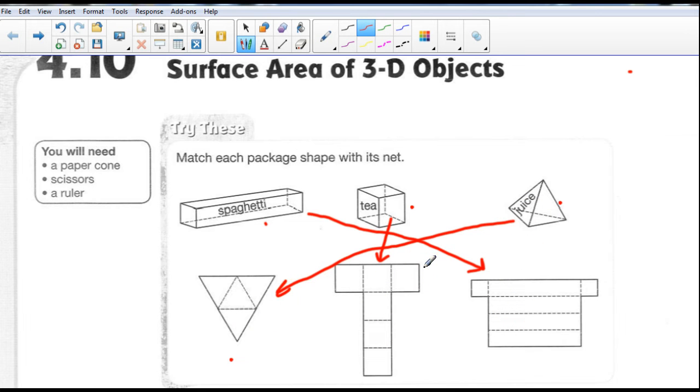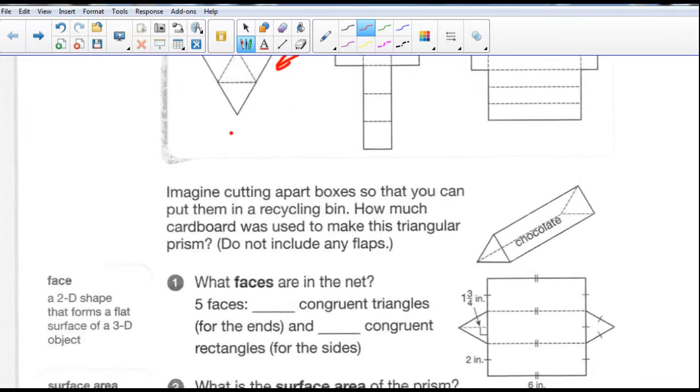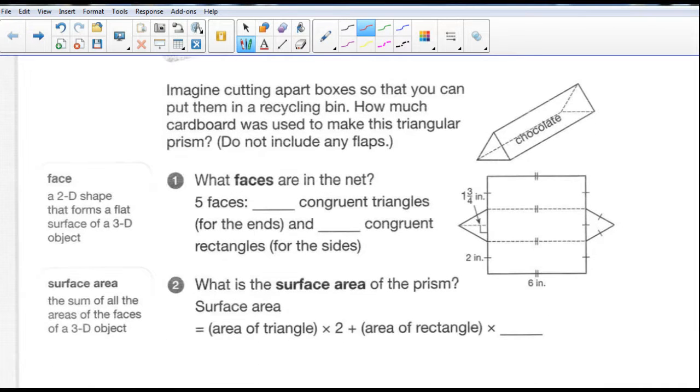So for this particular part of the chapter you're going to need scissors, a ruler, perhaps a paper cone to do one of the examples. But let's just go down and try one of these examples down here. So imagine cutting apart boxes so that you can put them in a recycling bin. How much cardboard was used to make this triangular prism? It says do not include any flaps. So we've got this triangular prism right here and it kind of looks like a Toblerone chocolate bar box. You've probably seen that in the store. And what does it look like when it's unfolded? Cut along the seams and unfold it or perhaps unglue it or if you want to break it apart to recycle it. It looks like that. This is its net.